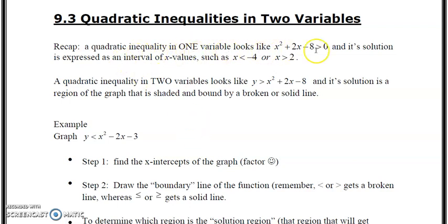So a recap, a quadratic inequality in one variable looks like this. Its solution is expressed as intervals. Now we're going to express it on a graph. This is for two variables. We have the y included and we graph the quadratic and then we shade above or below.